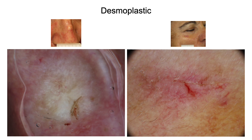Desmoplastic melanoma represents less than 4% of melanomas and usually appears as a papule or nodule on chronically sun-damaged skin, with head and neck being the most common site. Histologically, a dermal proliferation of spindle fibroblast-like cells may be observed, with a stromal collagen load greater than 90% of tumor mass by definition. A peritumoral lymphoid infiltrate also represents a diagnostic clue.